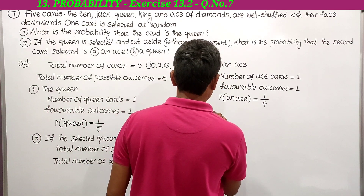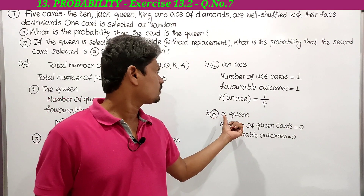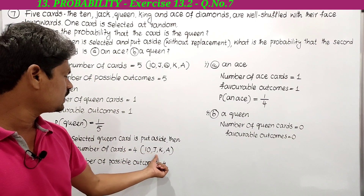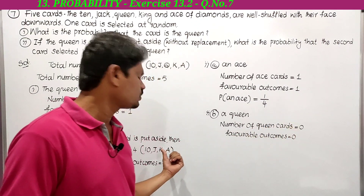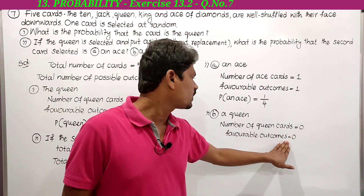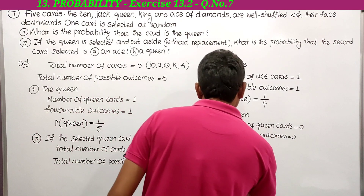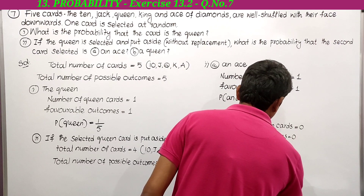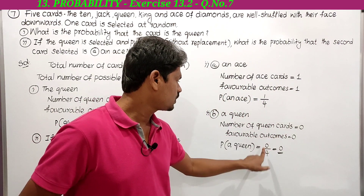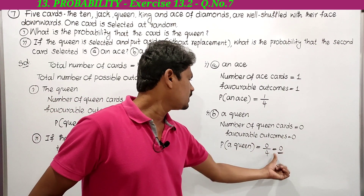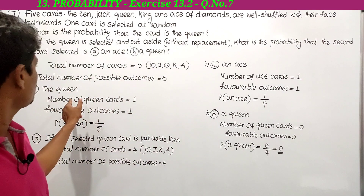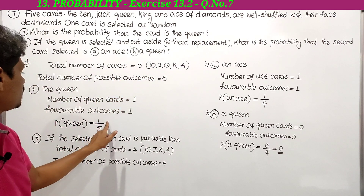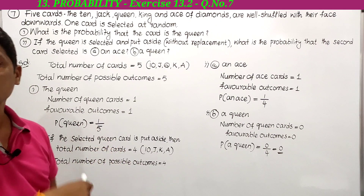For part (b), a queen: the number of queen cards equals 0, since the queen card is kept aside. The remaining cards are 10, jack, king, and ace. Favorable outcomes for queen card is 0. Therefore probability of a queen equals 0 divided by 4, which is 0. So the first one has probability 1 by 5, and the second part for queen probability is 0.